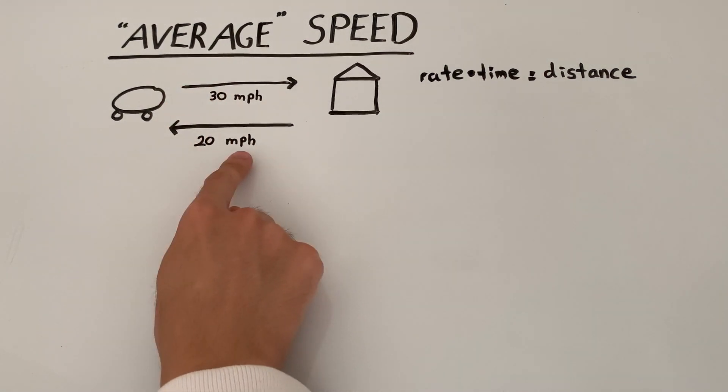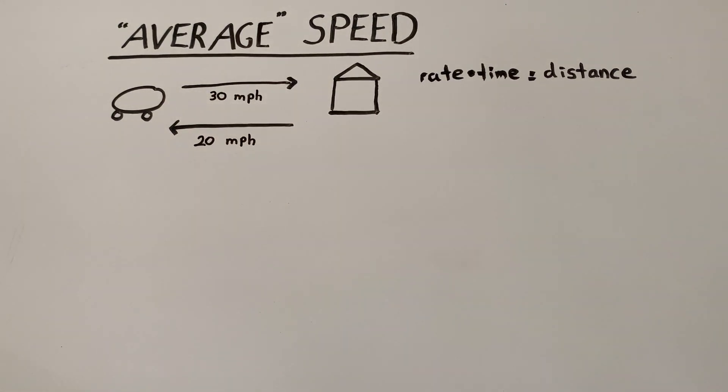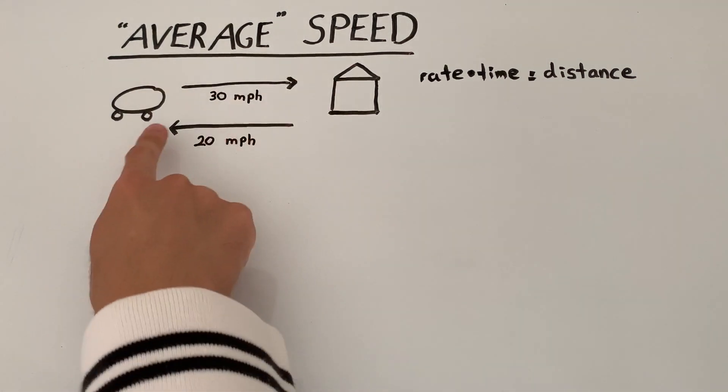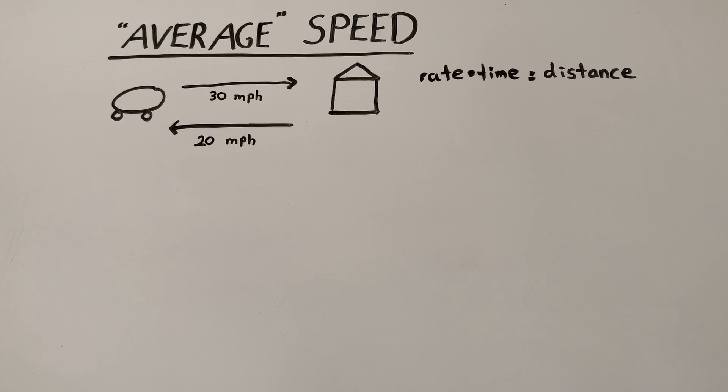I wasn't as enthusiastic about going back home, so I went at a slower speed of 20 miles per hour. So the question is, what was the average speed for this whole entire trip to Grandma's house and back?